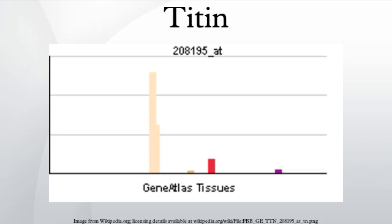Titin, also known as connectin, is a protein that, in humans, is encoded by the TTN gene. Titin is a giant protein that functions as a molecular spring which is responsible for the passive elasticity of muscle. It is composed of 244 individually folded protein domains connected by unstructured peptide sequences. These domains unfold when the protein is stretched and refold when the tension is removed. Titin is important in the contraction of striated muscle tissues.